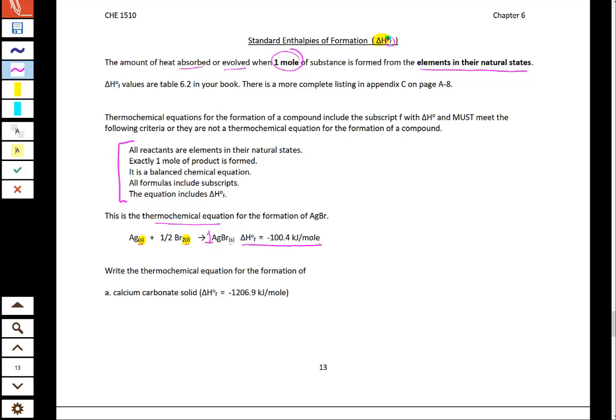We absolutely have our equations of state, our solid liquid gas aqueous. And then off to the side, we have our delta H. So, these five things have to be followed in order for us to have a heat of formation, especially the reactants being elements in their natural state and forming one mole of product.